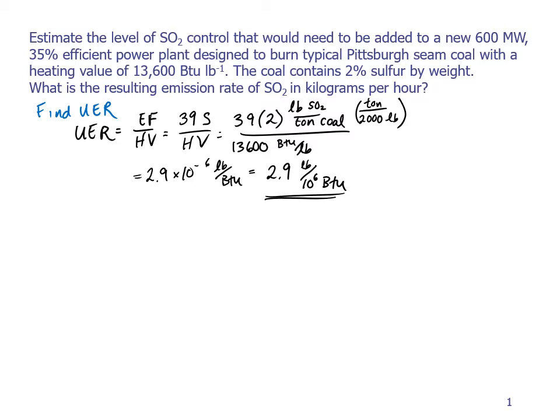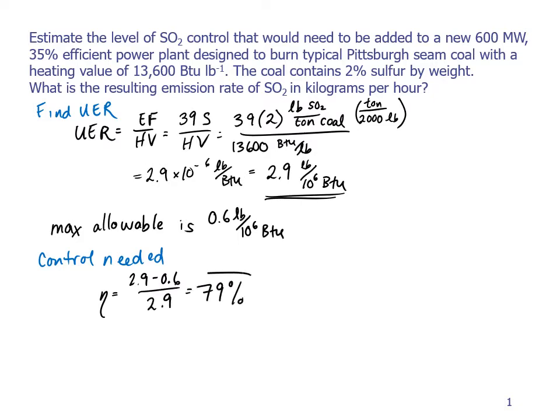And so then we can go look up in a table or somewhere what this uncontrolled emission rate falls into a certain range, and then we can figure out how much are we actually allowed to emit. And it turns out that for this amount of uncontrolled emissions, the maximum allowable is 0.6 pounds per million BTU. Thus, the amount of control that's needed has to get us from 2.9 down to 0.6. So we can write that eta the efficiency is equal to 2.9 minus 0.6 divided by 2.9, or 79% control that we need.